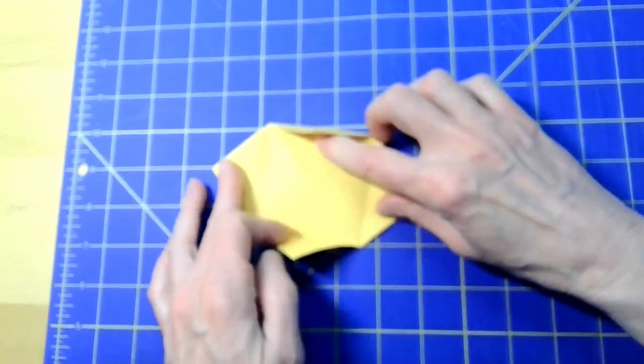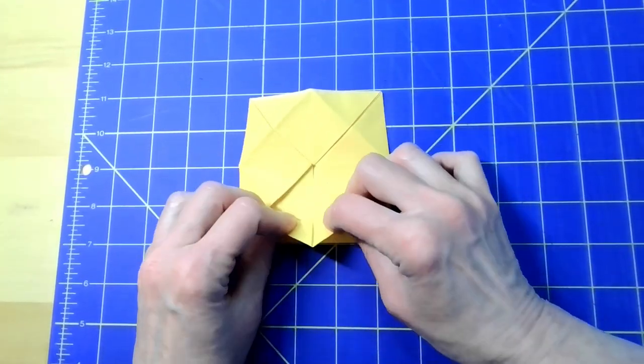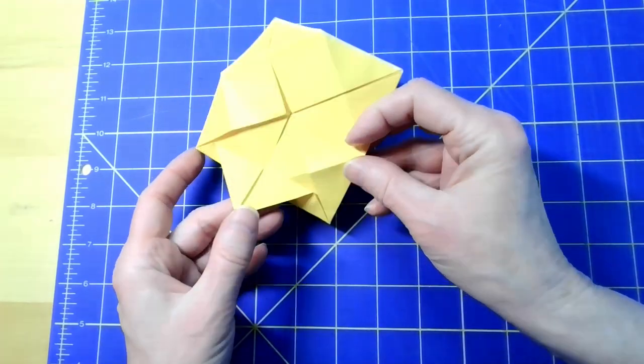Now unfold the last set of creases and flip the paper over again. This time, you'll fold each triangular flap out.